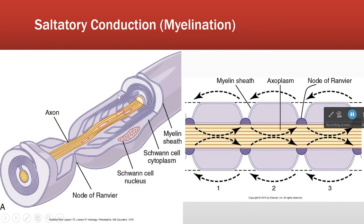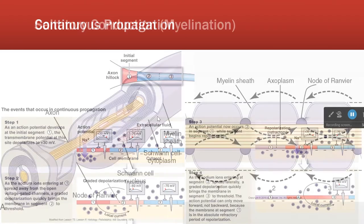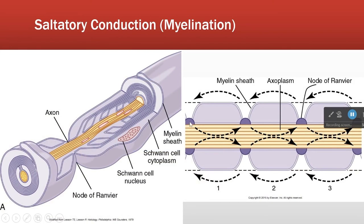The other kind of conduction is called saltatory conduction. Instead of every little bit of membrane depolarizing — which is slow — in myelinated conduction we only depolarize the membrane at specific spaces. This is the axon, and this is a myelin cell called a Schwann cell. The Schwann cell has myelin, which is like insulation — a lipid-based insulation that blocks the membrane and does not allow charge to leak through.